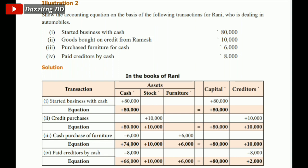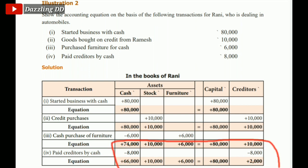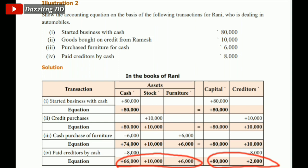Now we pay our creditors 8,000 in cash. So Cash is minus 8,000 and Creditors is minus 8,000. The equation: on the left hand side, Cash 66,000 plus Stock 10,000 plus Furniture 6,000 equals 82,000. On the right hand side, Capital 80,000 plus Creditors 2,000 equals 82,000. Both sides balance at 82,000.